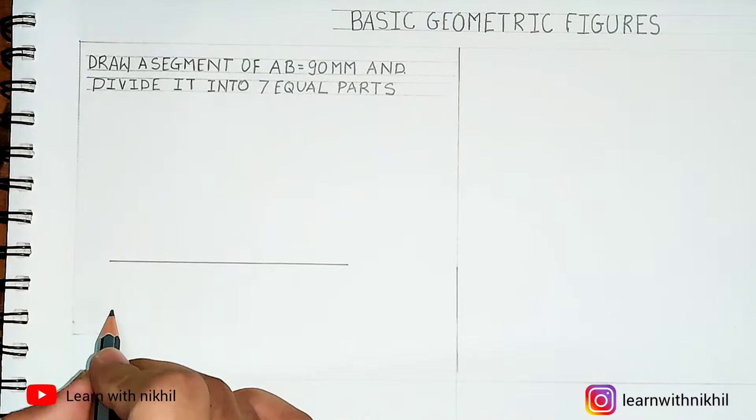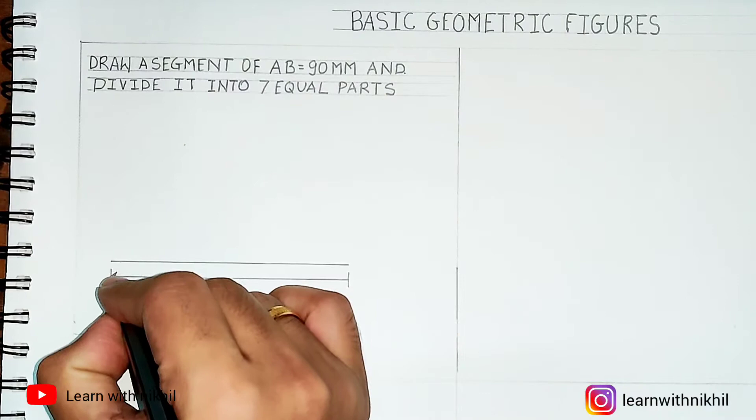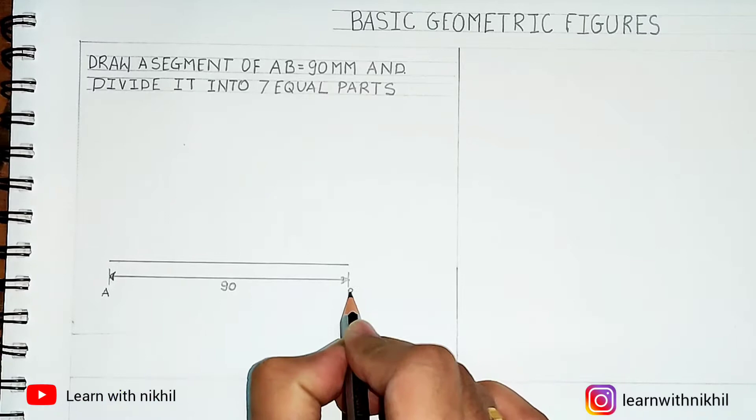In the exam, they can ask you to divide into any equal number of parts - five, six, seven. You will be able to do it through this method. First, we have drawn a line of 90mm. Mark the dimensions and we will name it as AB.